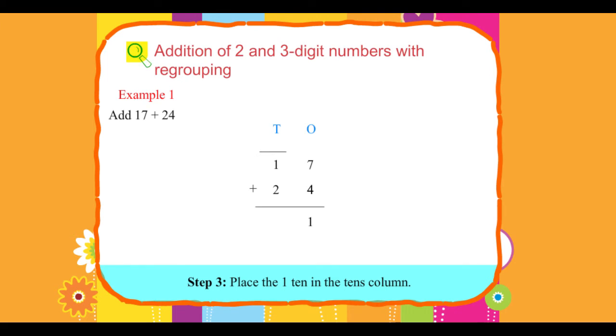Step 3: Place the 1 10 in the 10s column. 1 10 carried plus 1 10 plus 2 10s equals 4 10s. We now have our answer, 41.